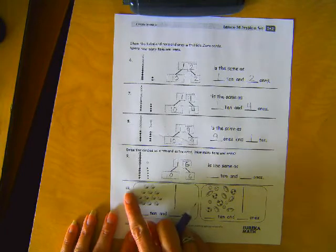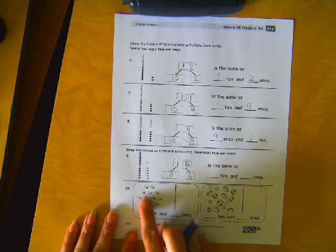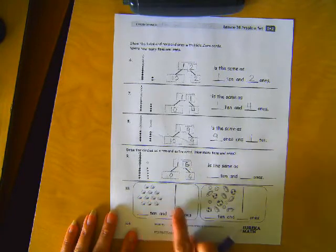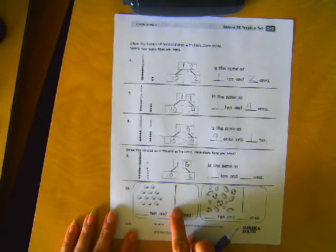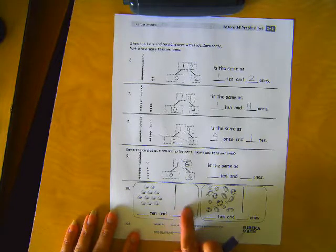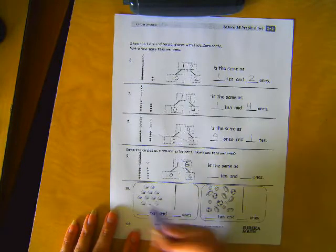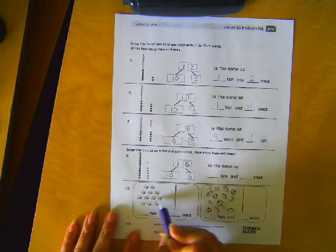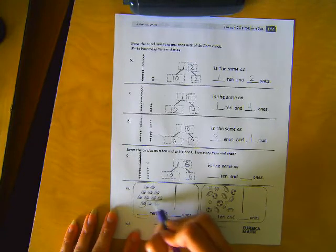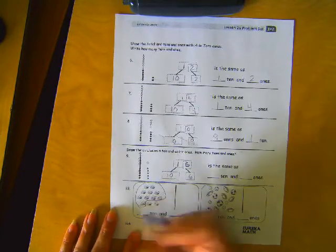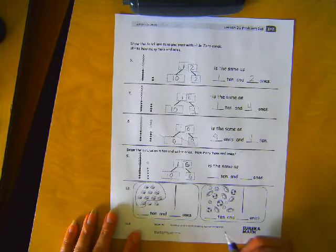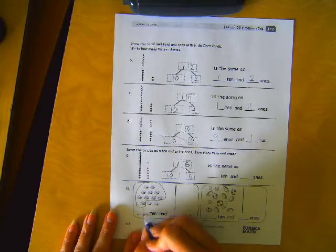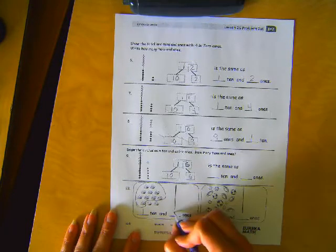And number ten wants us to figure out how many we have here and then show it using beads on a string and extra beads. So one, two, three, four, five, six, seven, eight, nine, ten. And group that ten. And then how many extra ones do I have? So I have one ten and two ones.